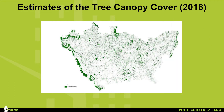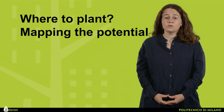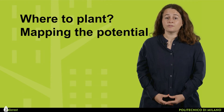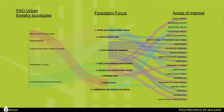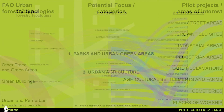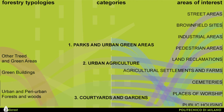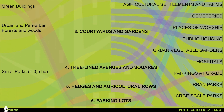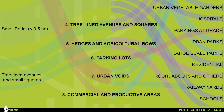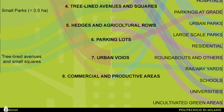The tree canopy cover within the metropolitan area of Milan is calculated at around 16.5%. The second question when embarking on such a project is to map the potential of change — so, where to plant in order to map the potential? We started from the study of the urban forestry typologies proposed by FAO: tree-lined avenues, small squares, small parks, urban and peri-urban forests and woods, green buildings, and other trees and green areas. We then tried to understand these typologies within the Milanese context with specific focus.